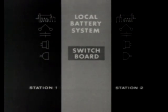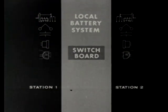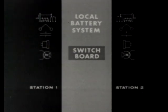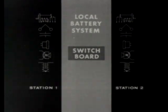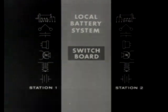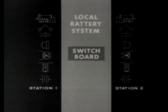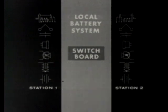The local battery system uses generators, ringers, capacitors, and receivers, but uses carbon transmitters instead of sound-powered transmitters. In addition, it uses induction coils and draws its energy from batteries at the individual stations. This system, too, may or may not use a switchboard.